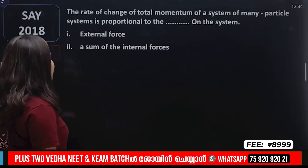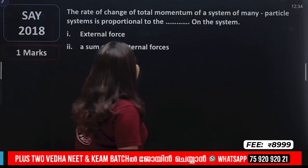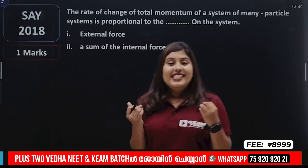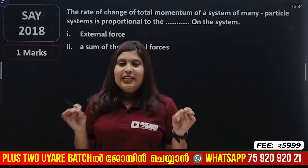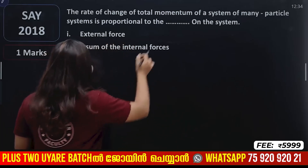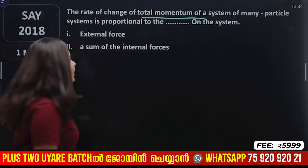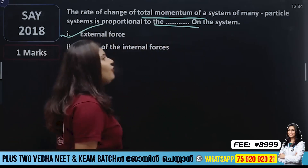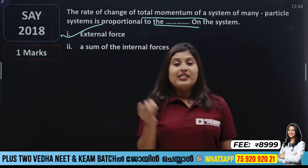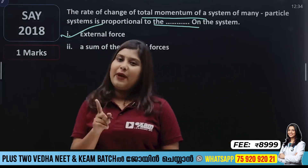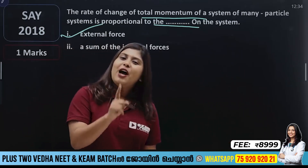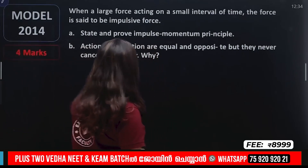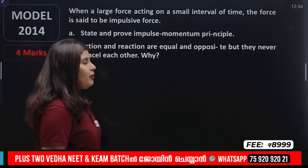The rate of change of total momentum of a system is proportional to the external force acting on it. This is the statement of Newton's Second Law: external force is proportional to the rate of change of total momentum. When a large force acts for a short interval of time, the force is said to be an impulsive force.